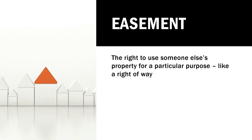E is for easements. An easement is someone's right of way to use someone else's property. An easement cannot occur when it is your own property — you have to be using someone else's property. For example, you need access to the main road, and the only way to get there is by going through your neighbor's property. That's an example of an easement.